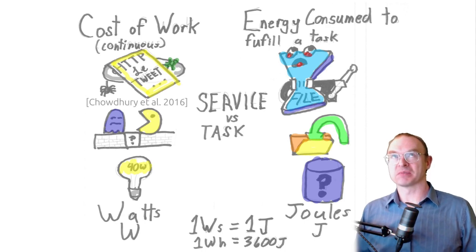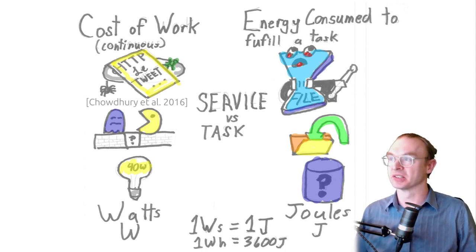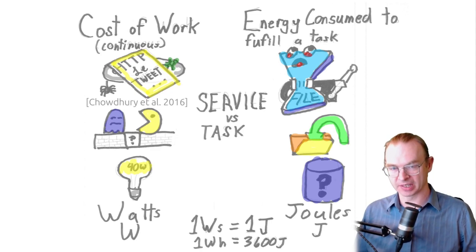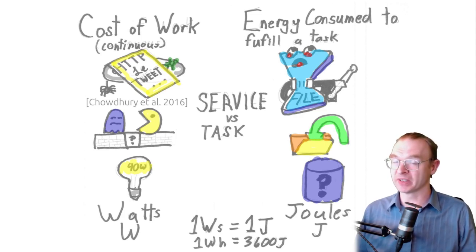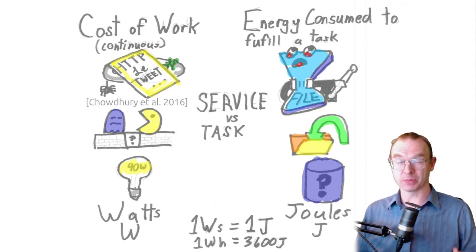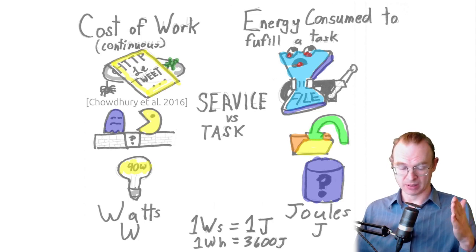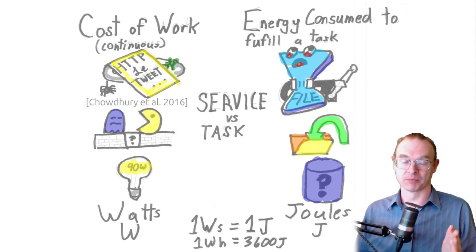When we're computing, there are two different ways to look at the energy consumption of computation. If we're talking about a continuous service — like your computer running, a web server, or playing a video game — you're consuming energy as long as you're doing those things. You might consume more energy if you're doing more of those things at once. This is like using a light bulb: a 40-watt bulb does continuous work at 40 watts instantaneously as long as it's on. Its power is 40 watts — that's a continuous action.